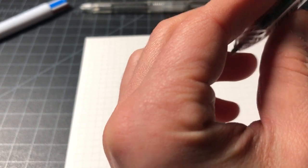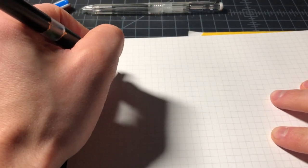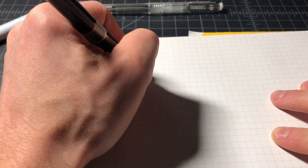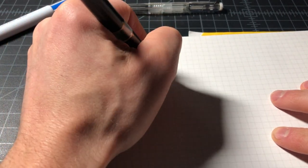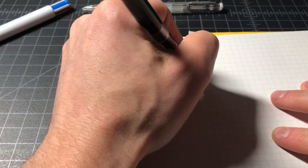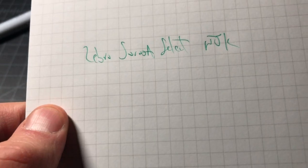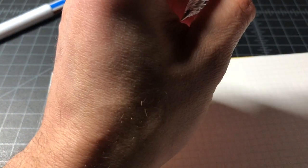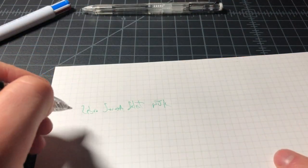So I will start off with the Zebra Sarasa Select. That's in the green. This is a lighter writing pen. It's a small ink, small nib, just not putting down a lot.